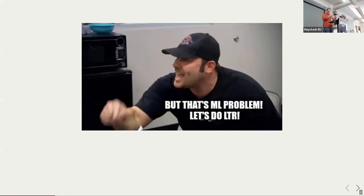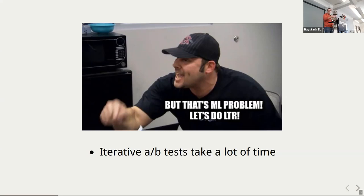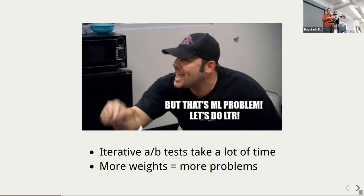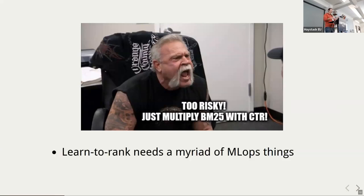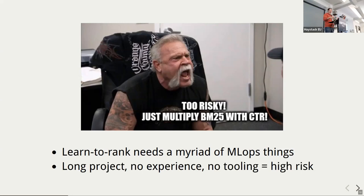Actually, even tuning weights for Elasticsearch is a machine learning problem — you're optimizing some metric of a black box system by tuning parameters. There is the learned to rank area of machine learning to solve this particular problem. This random tuning of field weights through A/B tests usually takes a lot of time. The more weights you have, the more parameters in your ranking formula, the more fragile it becomes — you tune one weight today and break something you tuned a month ago. But going all in for machine learning and setting up MLOps is kind of risky for traditional companies.